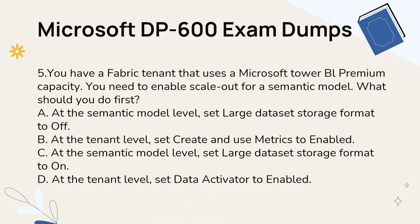Question 5. You have a Fabric tenant that uses a Microsoft Power BI Premium capacity. You need to enable scale-out for a semantic model. What should you do first? A. At the semantic model level, set large dataset storage format to off. B. At the tenant level, set create and use metrics to enabled. C. At the semantic model level, set large dataset storage format to on. D. At the tenant level, set data activator to enabled.